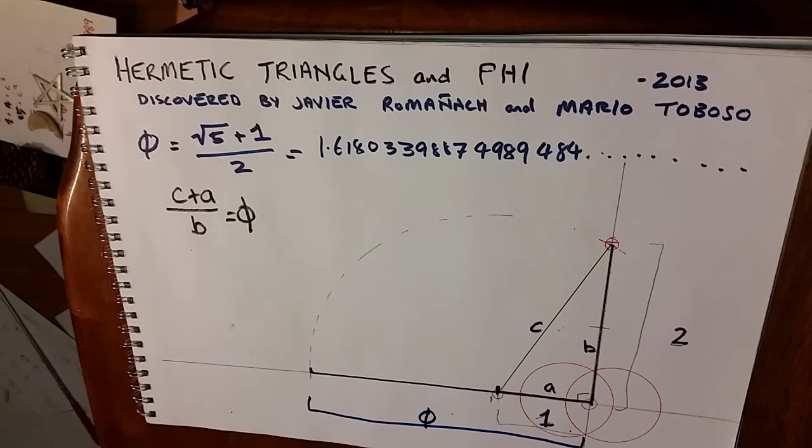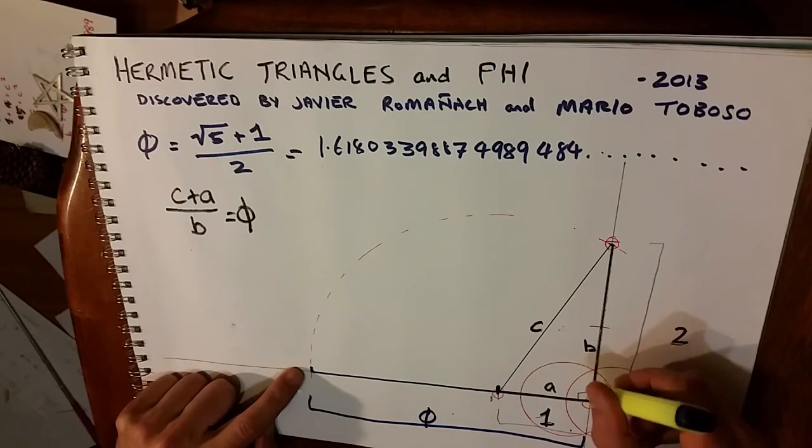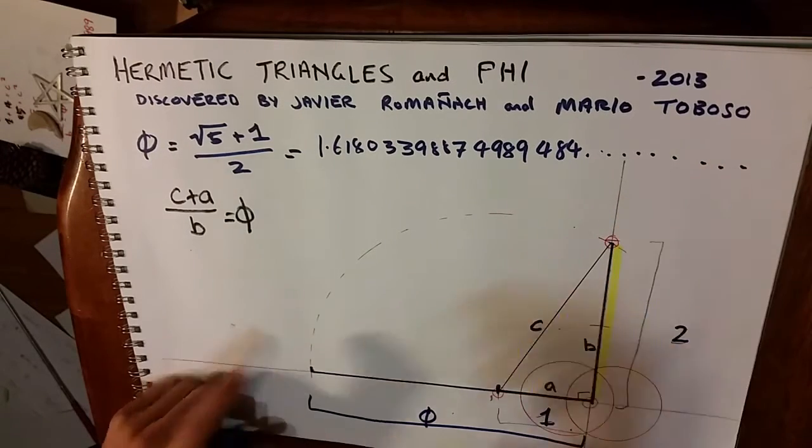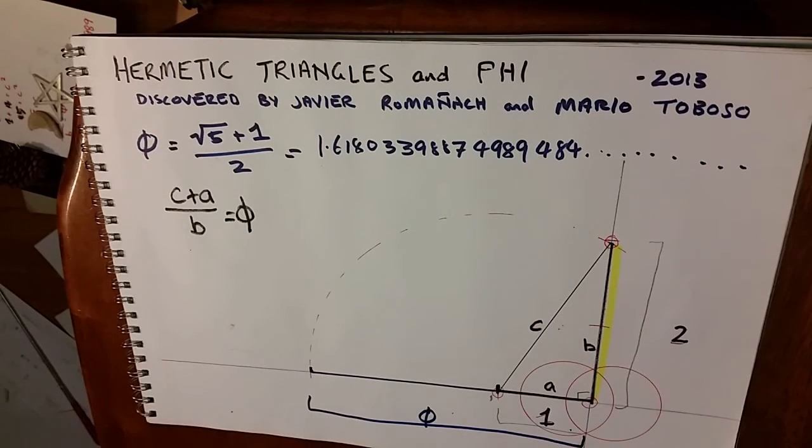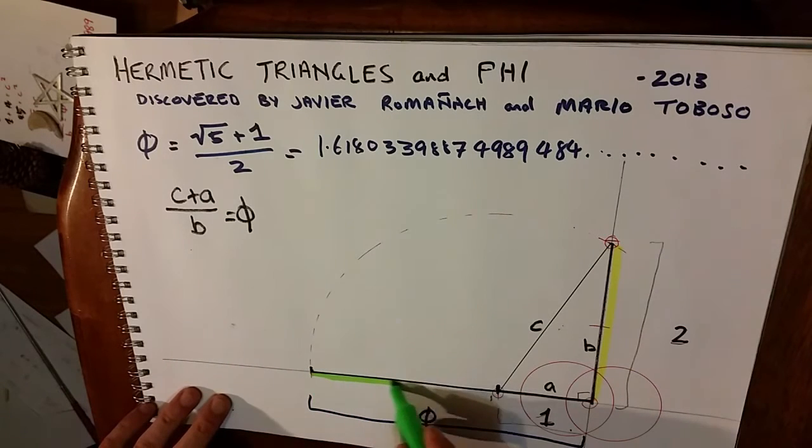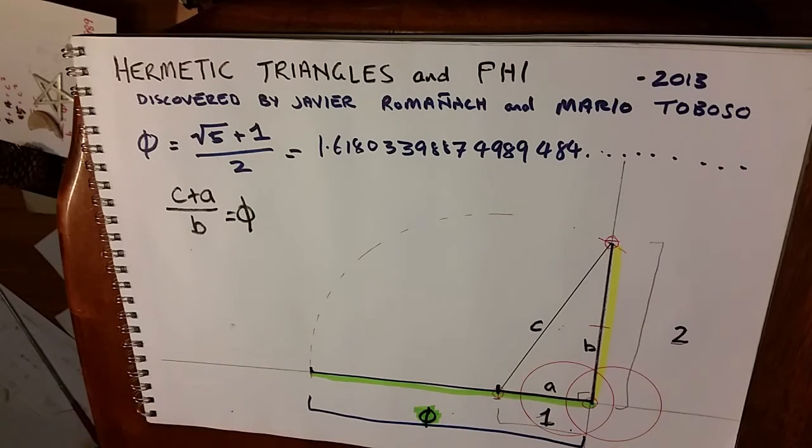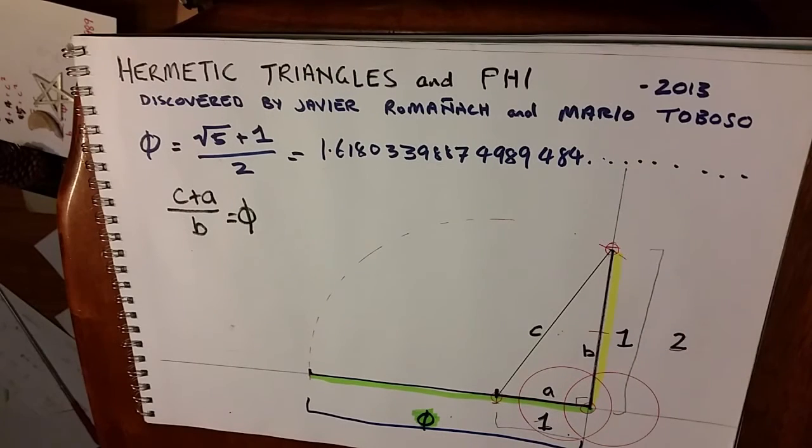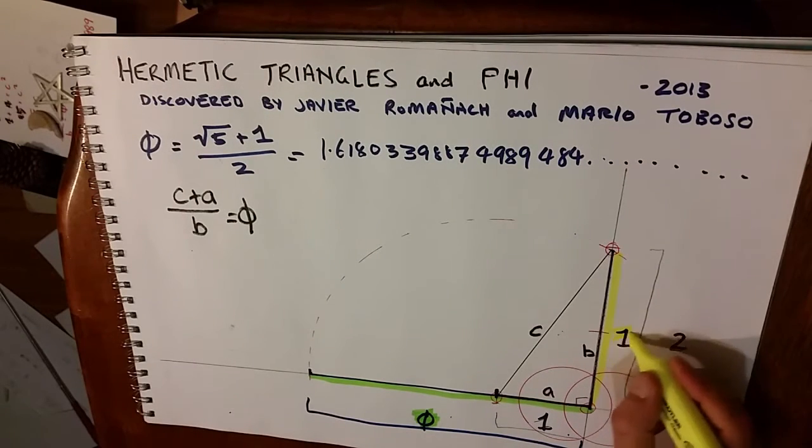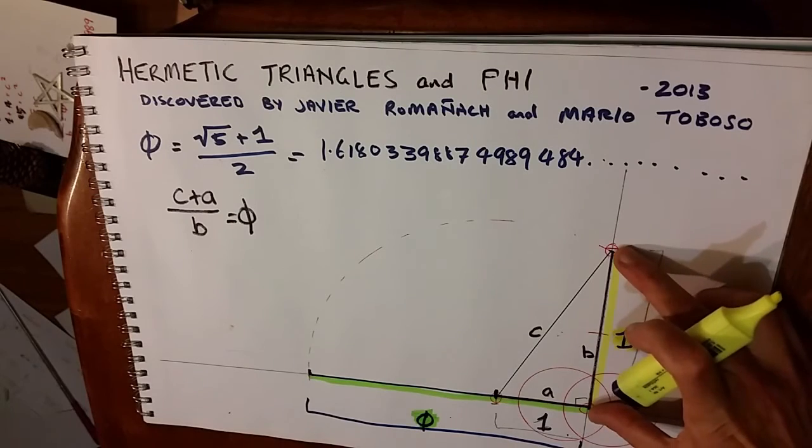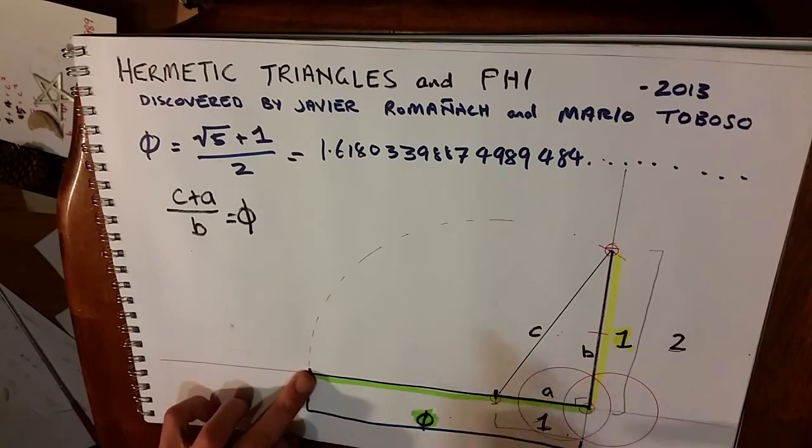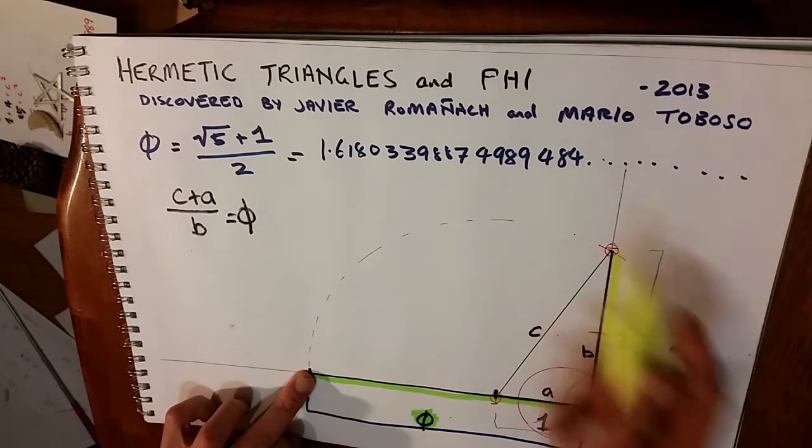Just to explain, by a phi ruler, now I'm at this yellow section and this green section. So phi is green as one is yellow. So if this length is one, this length is 1.6180339...